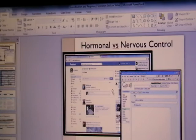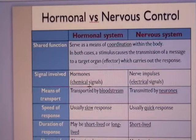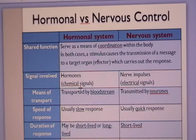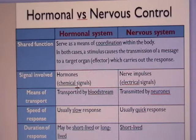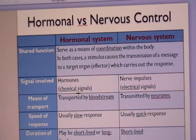For the comparison table, let us not waste any more time. This is a compare and contrast question again — you must talk about similarities. For both the hormonal system and the nervous system, both serve as a means of coordination within the body, and both include a stimulus and an effector.